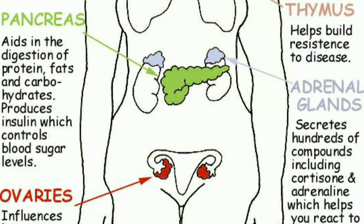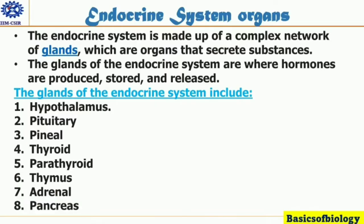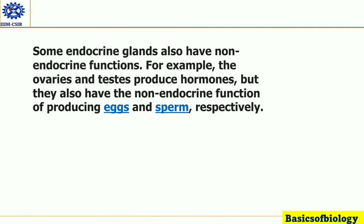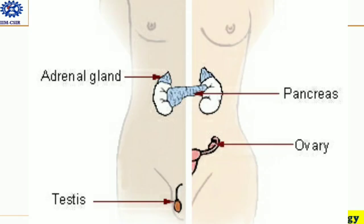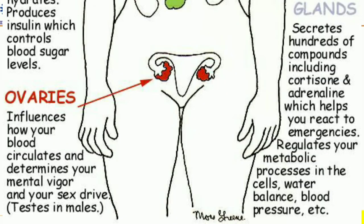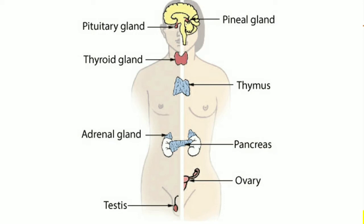The eighth is the pancreas, located in your abdomen behind your stomach. Its endocrine function involves controlling blood sugar levels. Some endocrine glands also have non-endocrine functions. For example, the ovaries and testes produce hormones, but they also have the non-endocrine function of producing eggs and sperm respectively. In women, the ovaries release sex hormones called estrogen, progesterone, and testosterone. Women have two ovaries in their lower abdomen, one on either side.